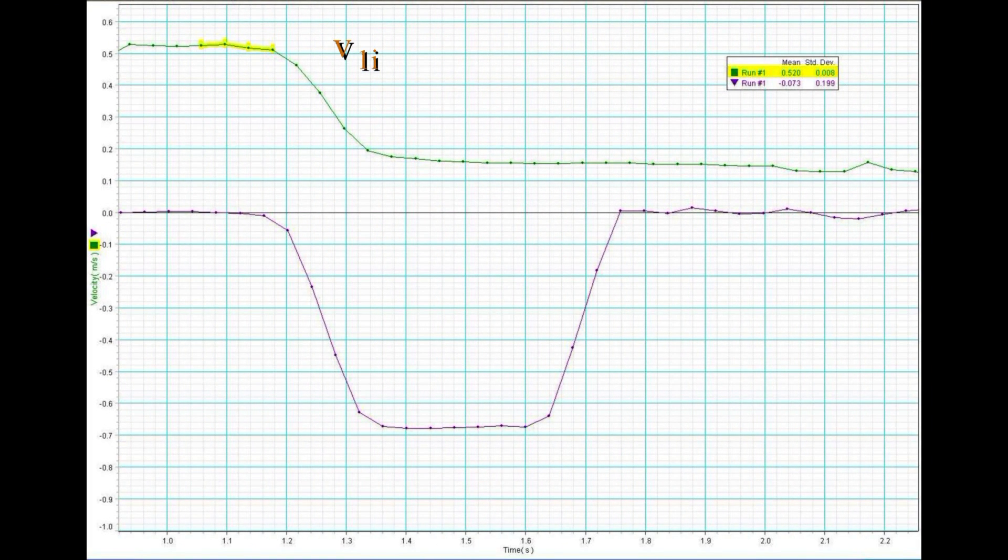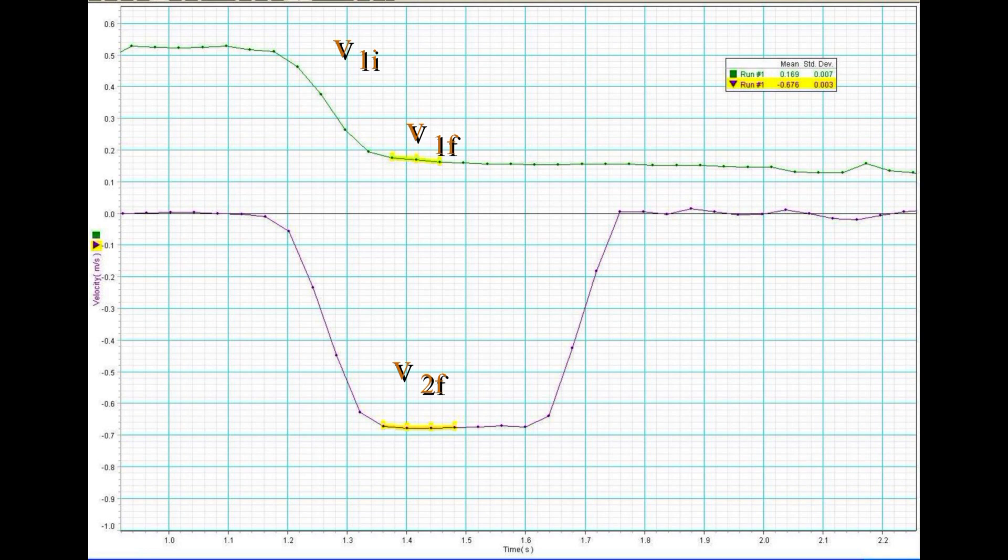Here is the measurement of cart 1's initial velocity. Here are the final velocities of cart 1 and cart 2. Even though the second motion sensor shows a negative value for the velocity of cart 2 because it's moving toward, you will correct its sign to a positive value, recognizing that it is moving to the right from the collision.